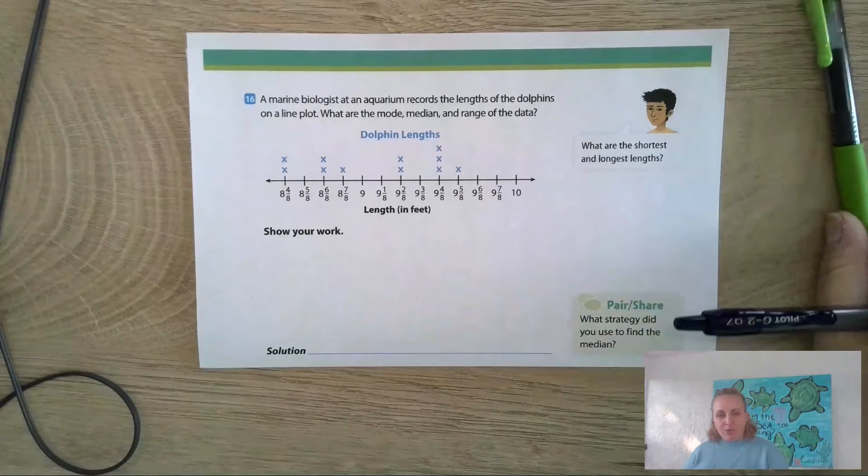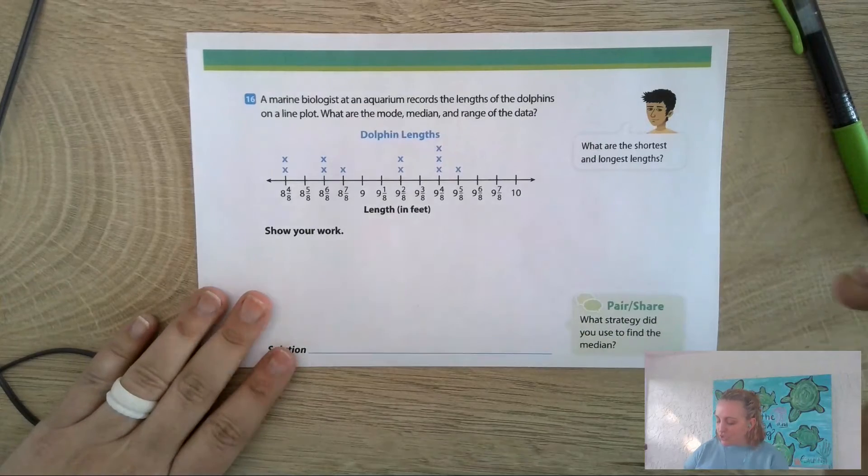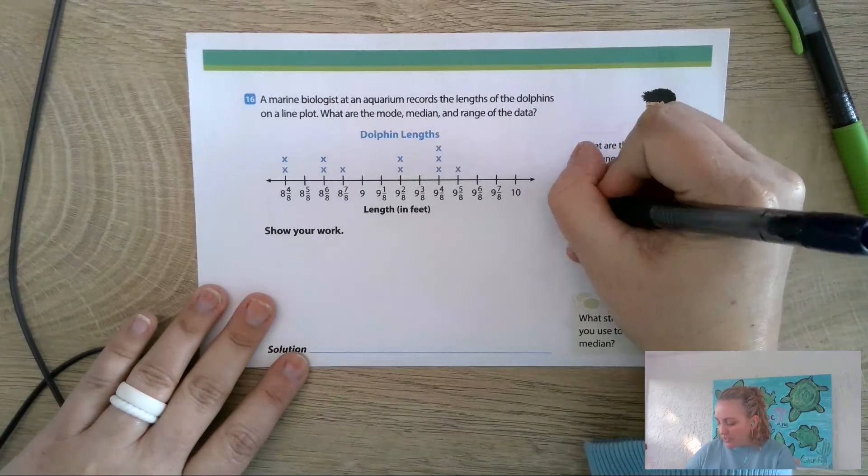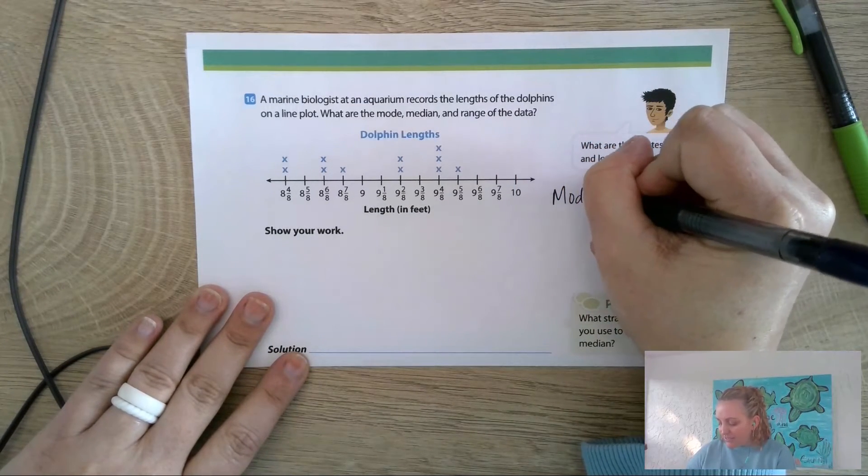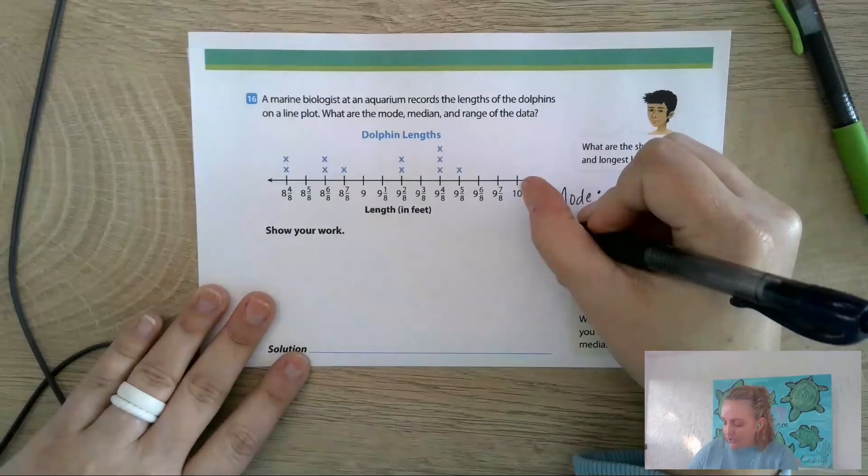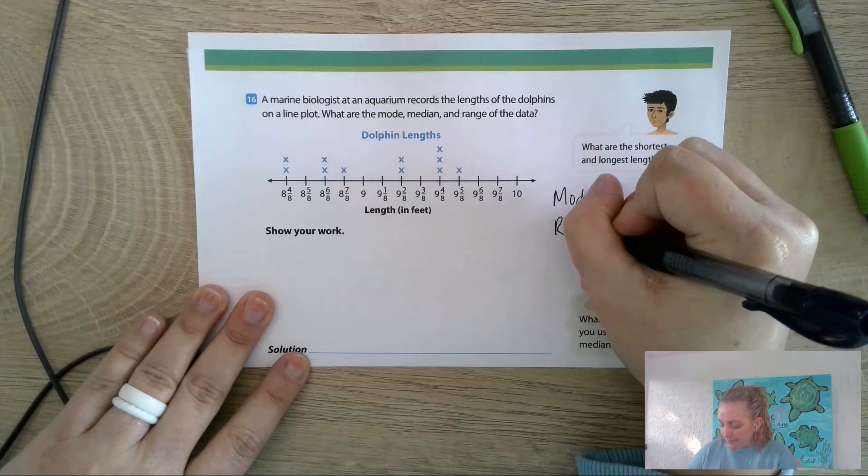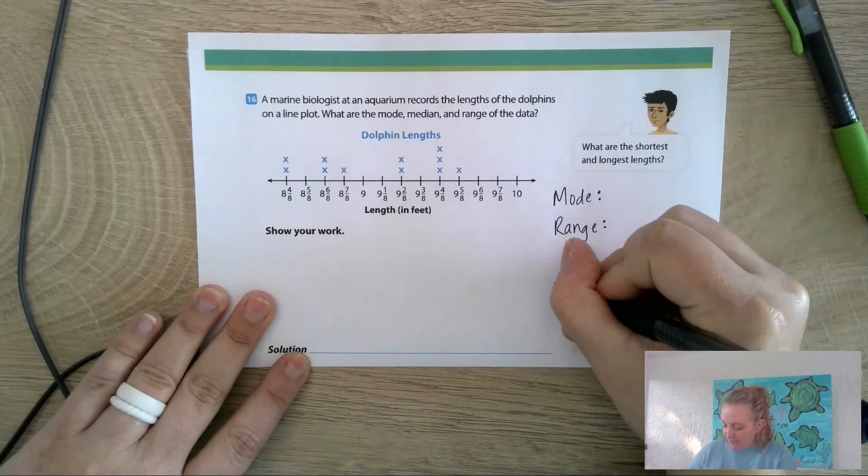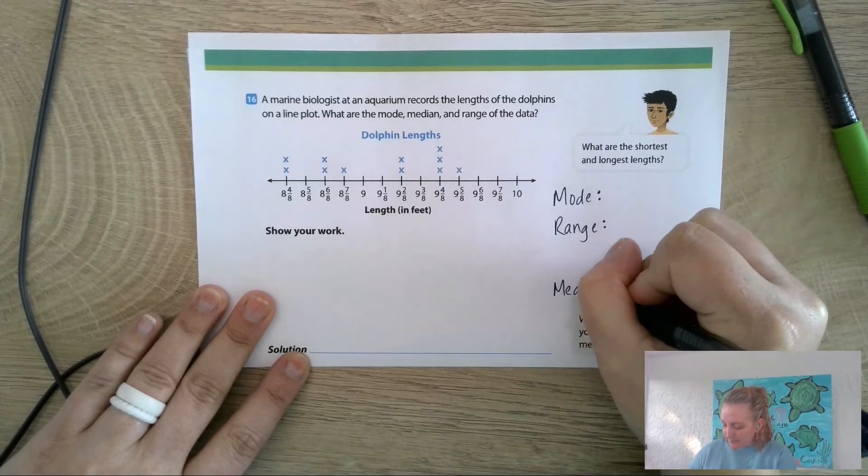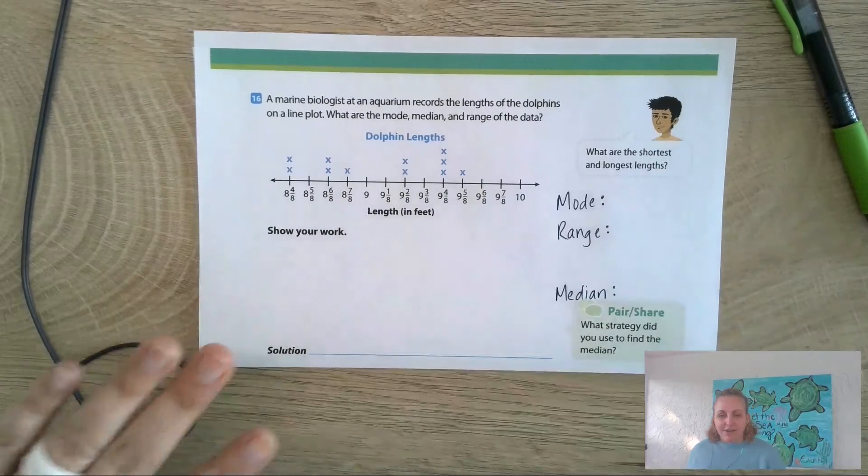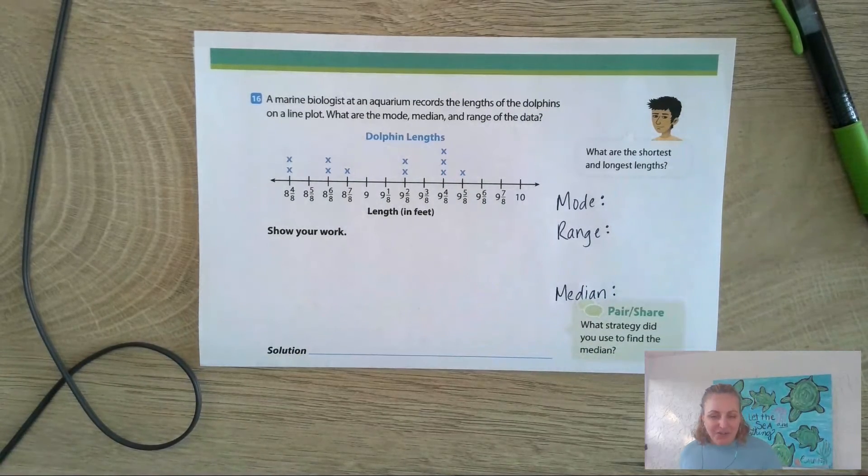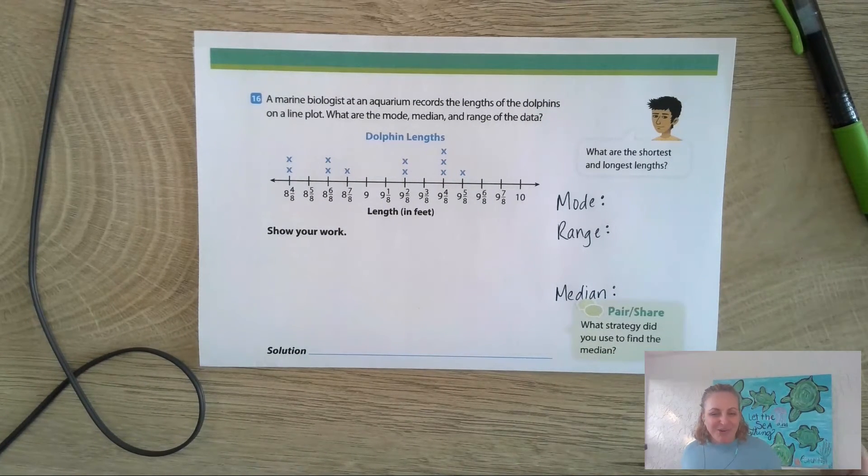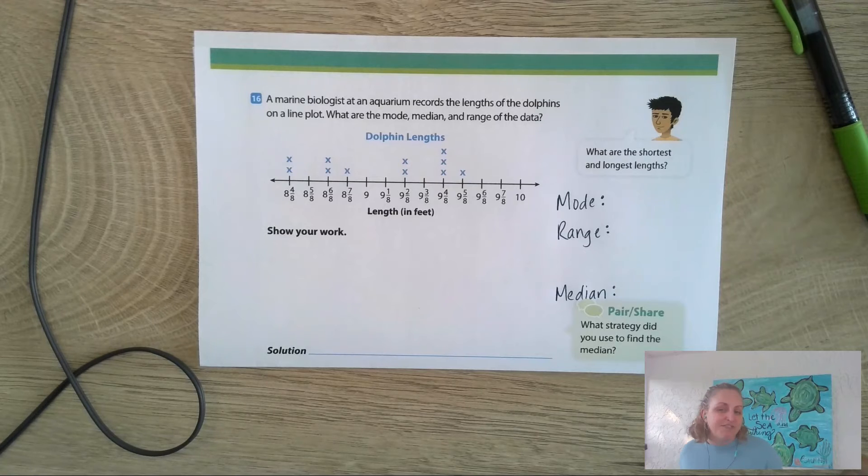Let's take a look at this. You are finding the mode - we'll always start with the mode, that's always one of the easier ones to do. The range, and then median. Go ahead and pause and find all three of those things, then come back and join me, and we will go over it.